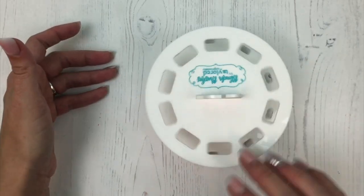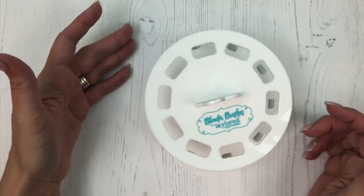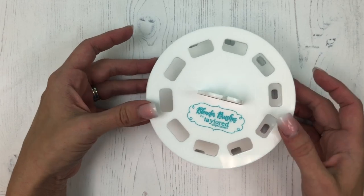Just thumbs here in the middle, nice even pressure to click that into place as well. And then you should have a perfectly assembled caddy that spins and does wonderful things and stores your brushes beautifully.